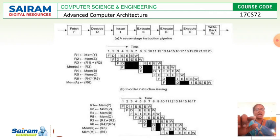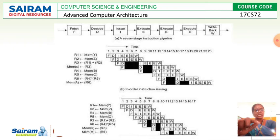This is called in-order instruction issuing. The instructions are executed in a sequential way, but we can shuffle them based on our scenarios — reordering is possible. In order to reduce the delays in pipelining stage execution, we can reorder the instruction execution. That is what is shown in the third diagram, which reduces the time delay in pipelining stage execution.